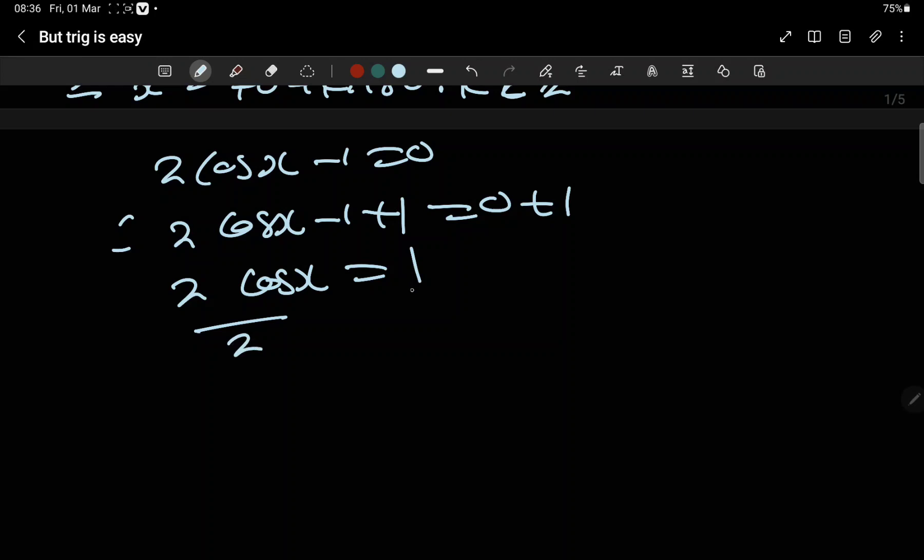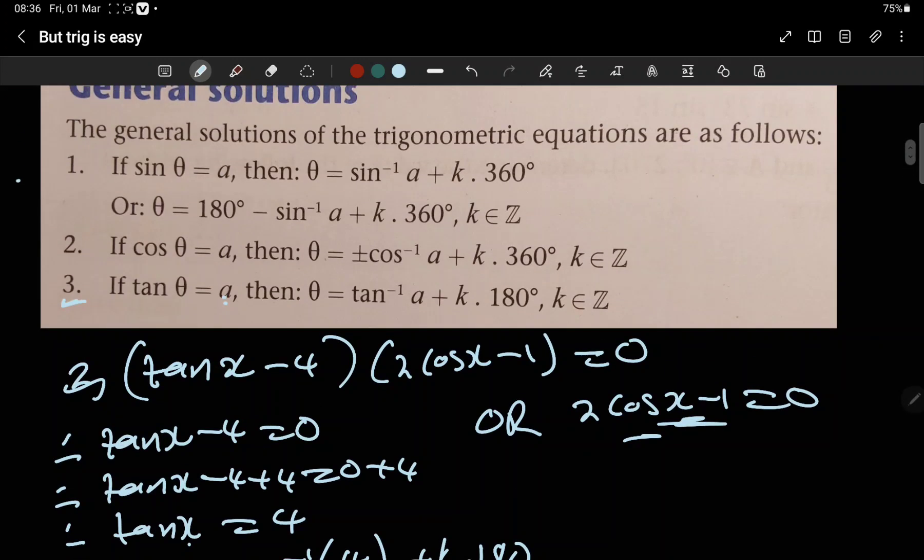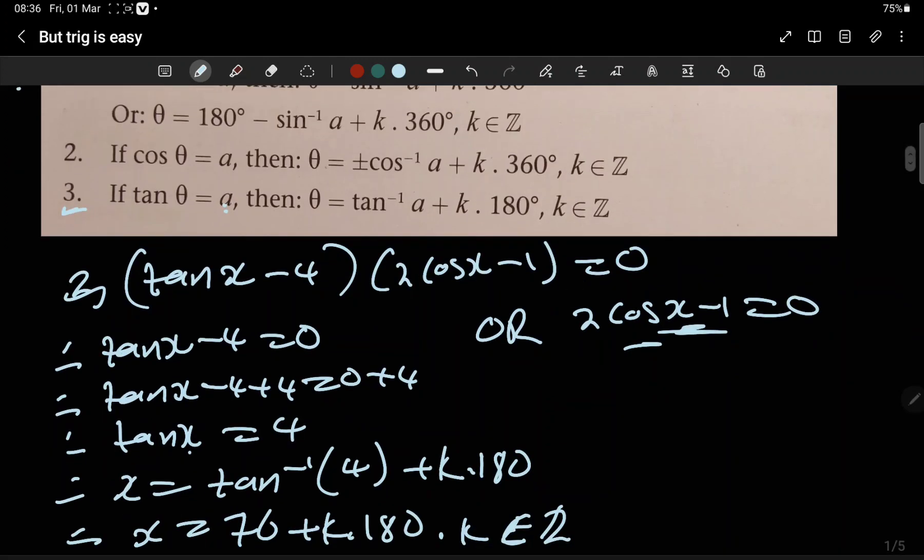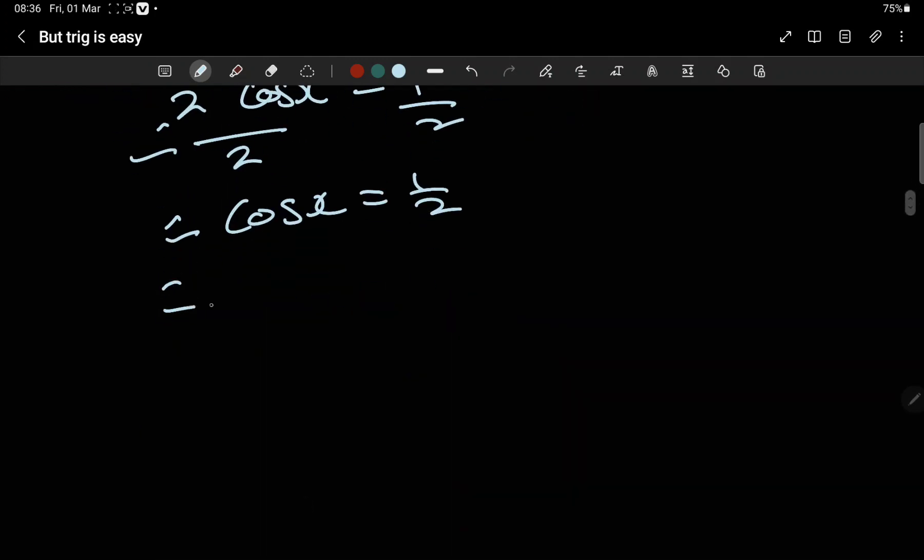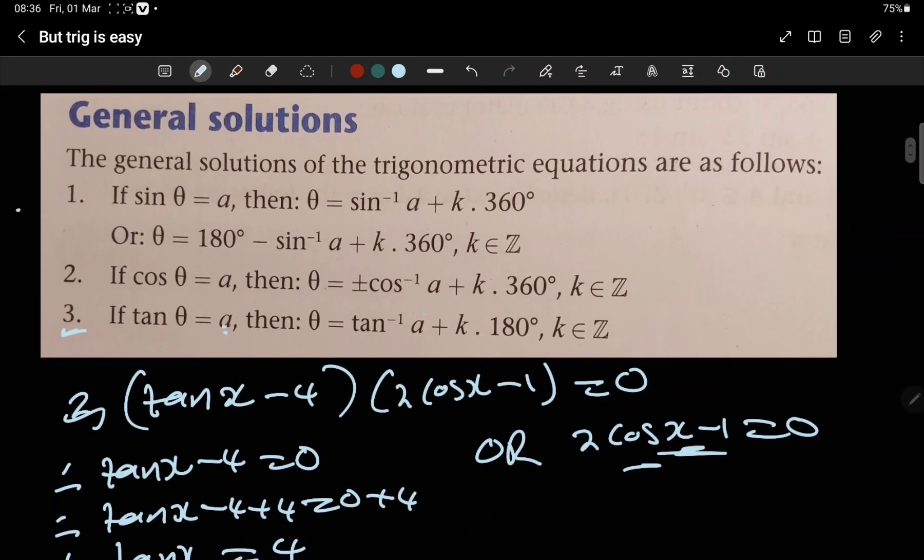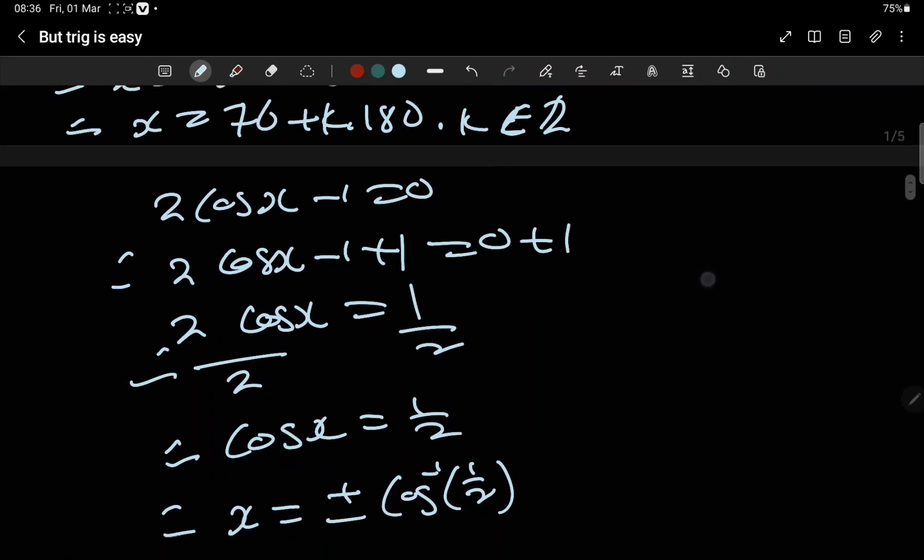Then divide both sides by two. We're left with cos(x) equals one over two, or a half. Now, if cos(θ) equals a, we have cos(x) equals one over two. Therefore, that principle: x would be equal to plus or minus arccos of one over two, plus k times 360 degrees.